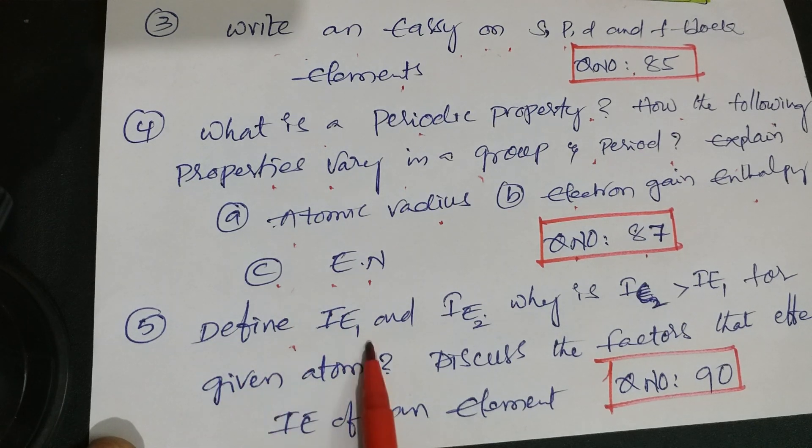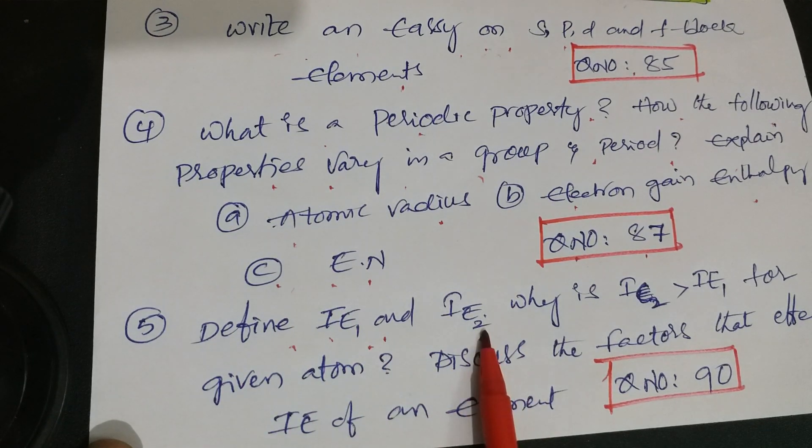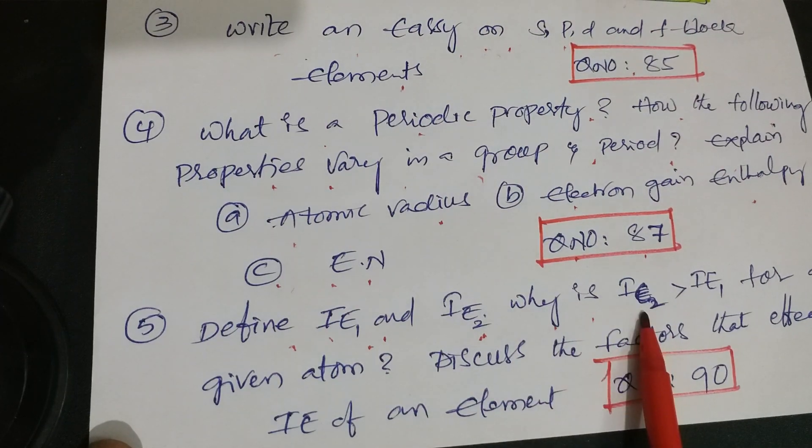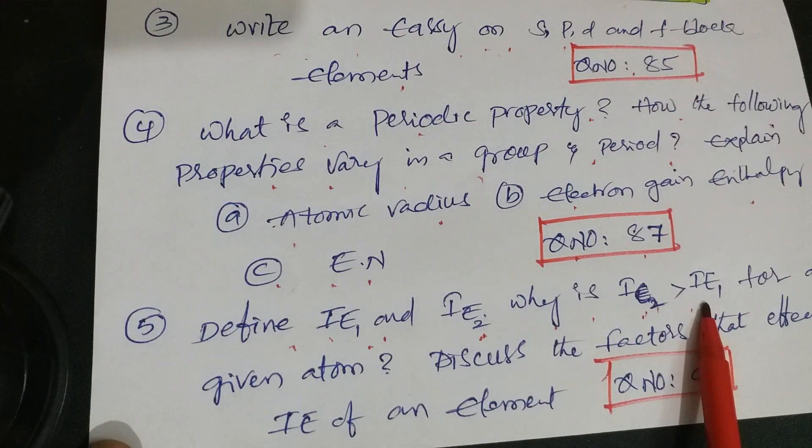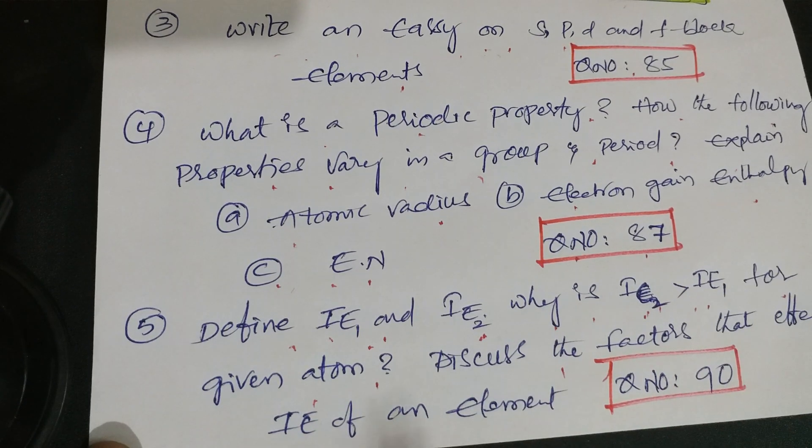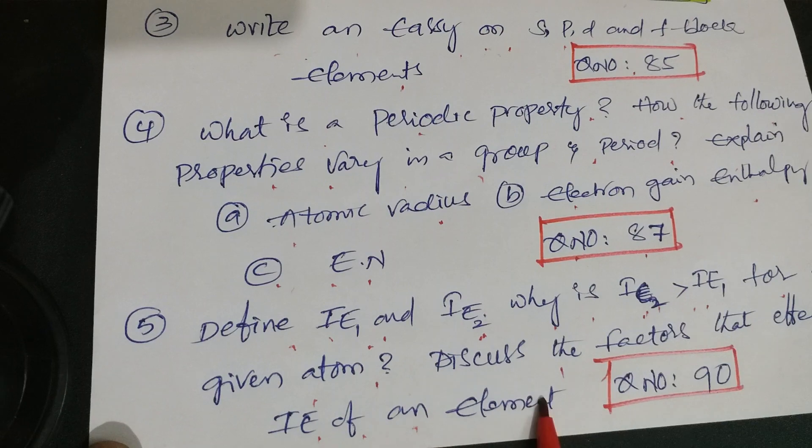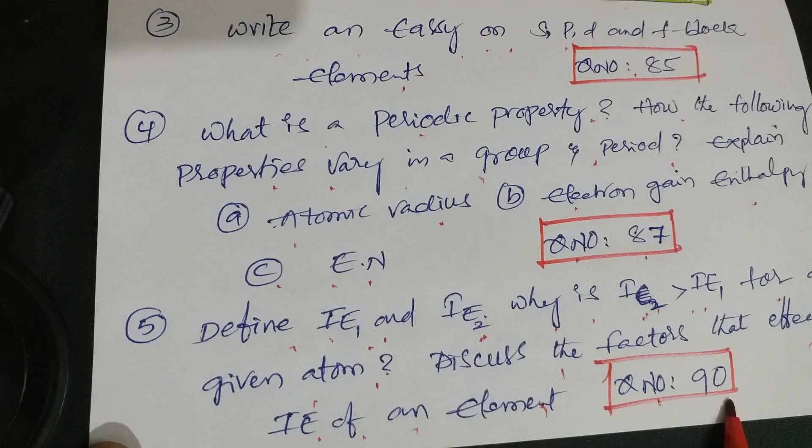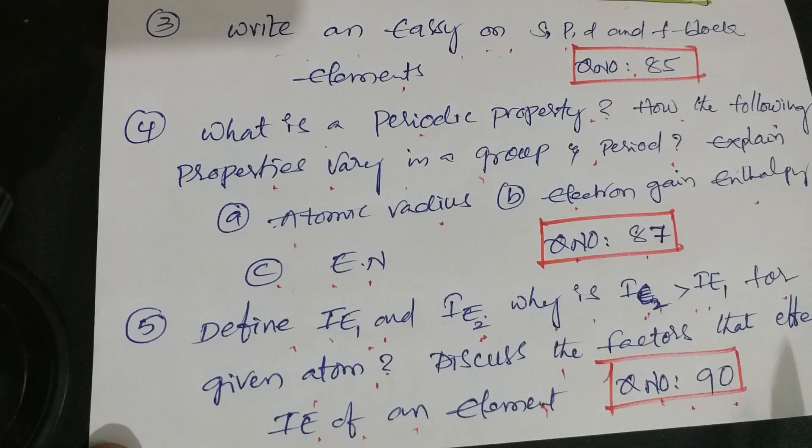Next question: Define IE1 and IE2, that is ionization enthalpy 1 and ionization enthalpy 2. Why is IE2 greater than IE1 for a given atom? Discuss the factors that affect ionization enthalpy of an element. That is question number 90 from Telangana Academy textbook.